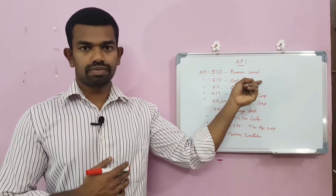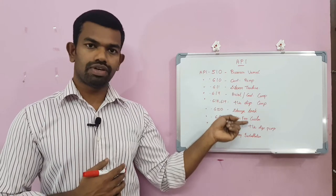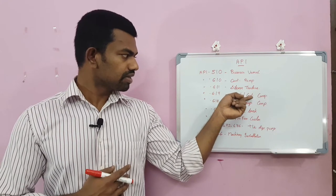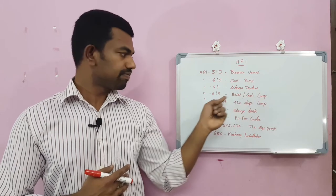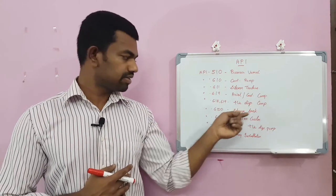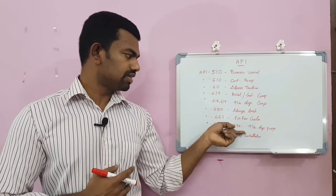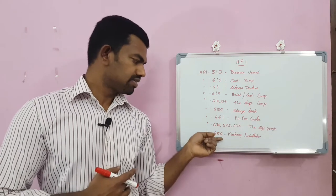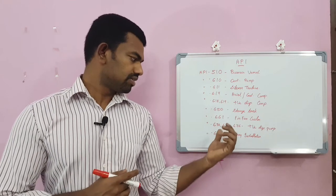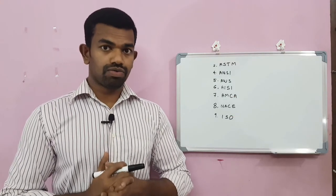API 611 is for steam turbines. API 617 covers axial and centrifugal compressors. API 678 and 679 cover positive displacement compressors. API 650 is for storage tanks. API 661 is for fin-fan coolers. API 674 and 675 cover positive displacement pumps. API 686 is a recommended practice covering machinery installation — how machinery is installed in the field.